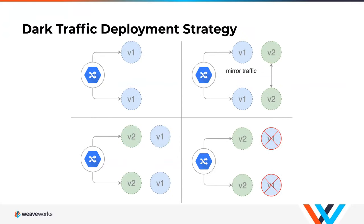Another way to leverage service mesh capabilities is dark traffic deployments — you spin up V2 and mirror the traffic from V1 to V2. This doesn't apply to all services, but it's a great way to ensure your new version works fine with your current production traffic.